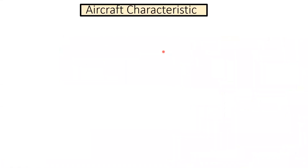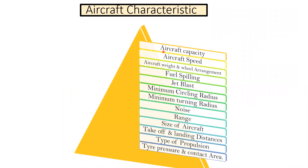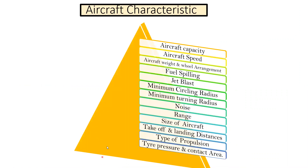In this lecture we will see what are the characteristics of an aircraft. These are the characteristics: aircraft capacity, aircraft speed, aircraft weight, wheel arrangement, fuel spillage, jet blast, minimum circling radius, minimum turning radius, noise, range, size of aircraft, takeoff and landing distances, type of propulsion, tire pressure, and contact area. Now we'll try to see each of them in detail.